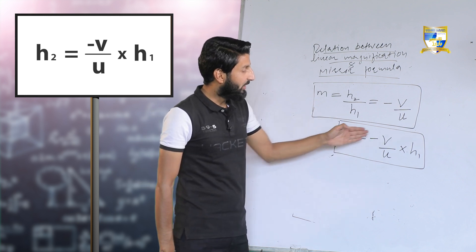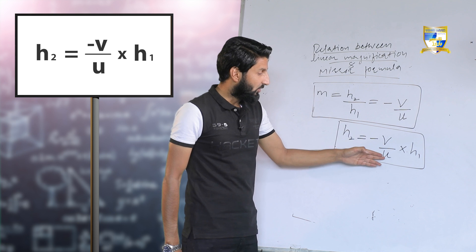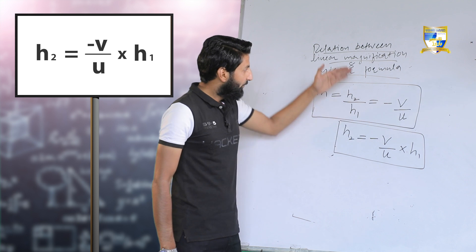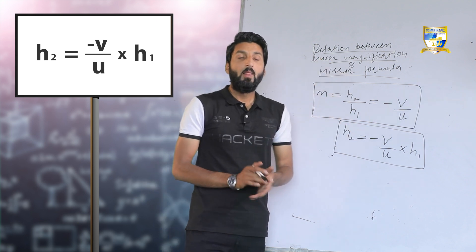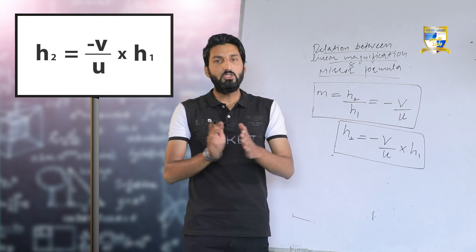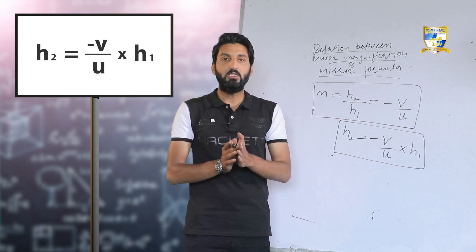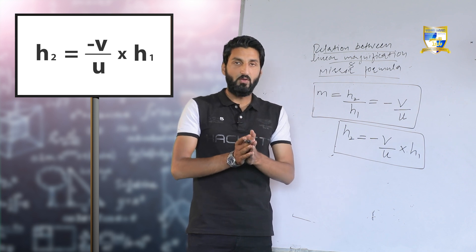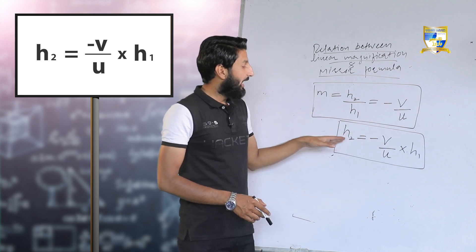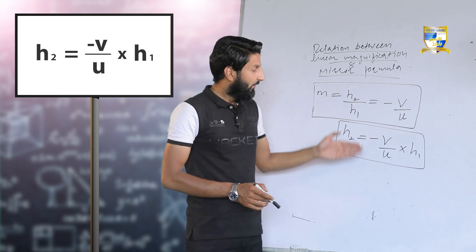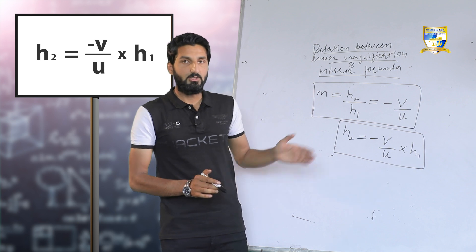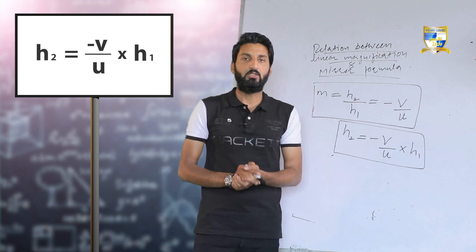The formula to calculate the height of the image is: H2 = (−V/U) × H1. Here H2 is the height of the image, V is the image distance, U is the object distance, and H1 is the height of the object. First calculate V using the mirror formula, then use this formula to find the actual size of the image. Numerical problems will be discussed in the next lecture.